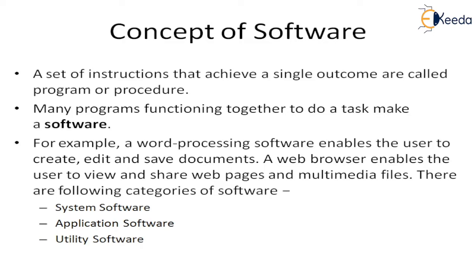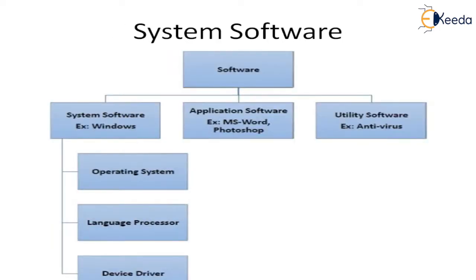There are the following categories of software: system software, application software, and utility software. System software is useful for system functions, and utility software is useful for supporting or providing security to the application and system software. Software is divided into three criteria: system software (e.g., Windows), application software (e.g., MS Office or Photoshop), and utility software (e.g., antivirus).